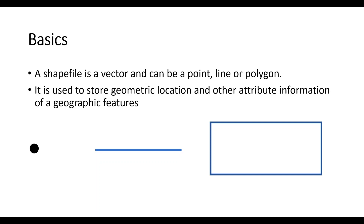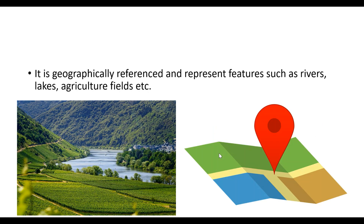First of all, we need to understand what is a shapefile. A shapefile is a vector and it can be either a point, line, or polygon. It is used to store geometric location and related attribute information of any geographic feature. As you can see, it can be a point, a line, or a polygon.